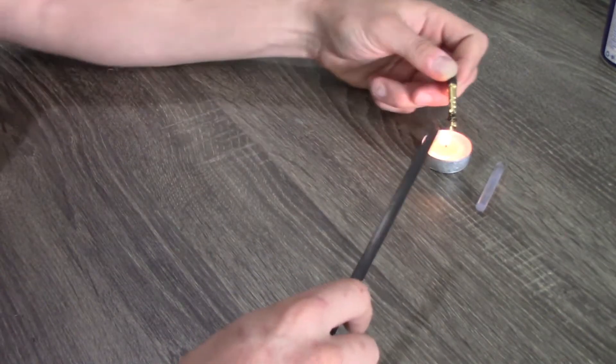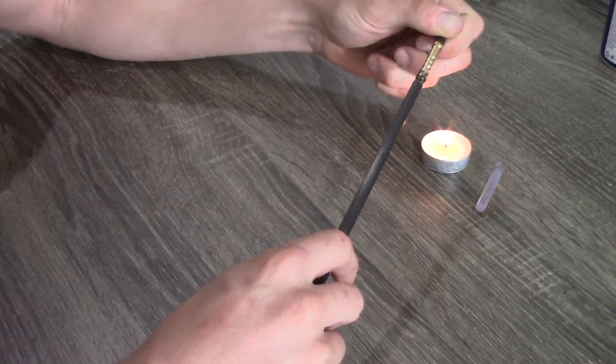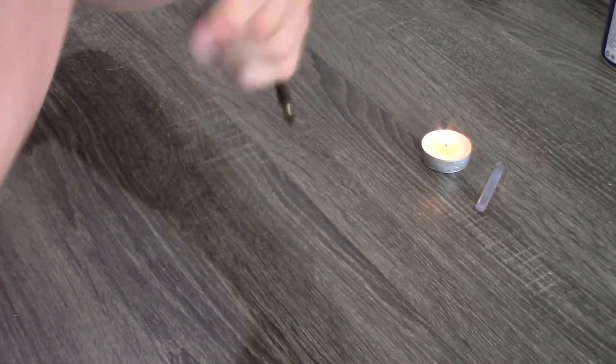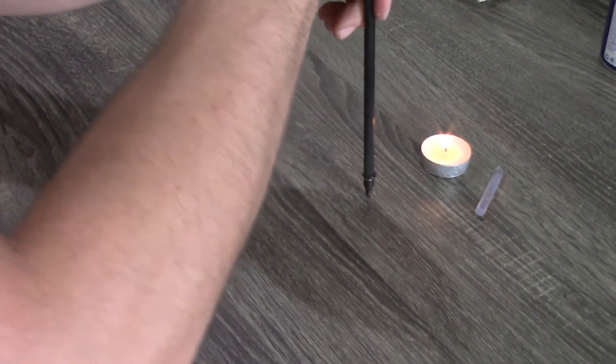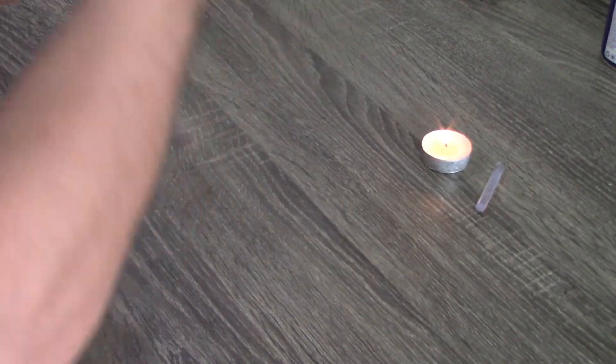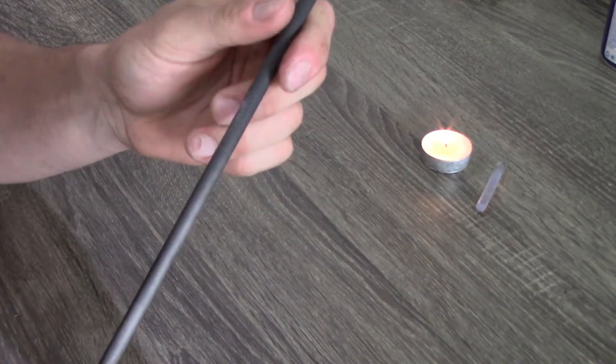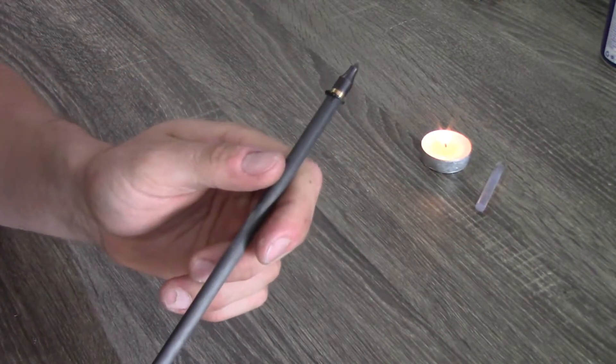Then I'm going to line up the red sharpie mark on the insert with the red sharpie mark on the end of the shaft and push it down firmly. And as you can see here, it's almost perfectly aligned.